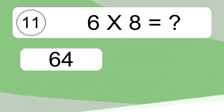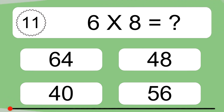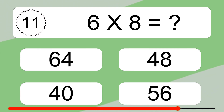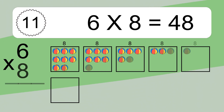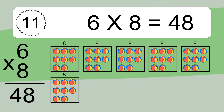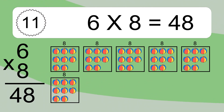6 times 8 equals what? 6 times 8 equals 48. We have 6 boxes and each box has 8 colorful balls inside. If you count all the balls in all the boxes together, you will have 6 times 8 balls. This equals 48 balls.